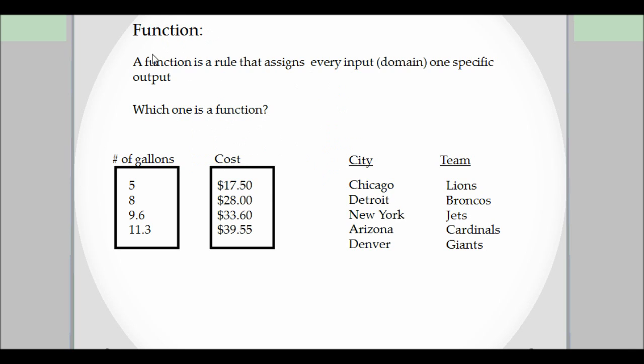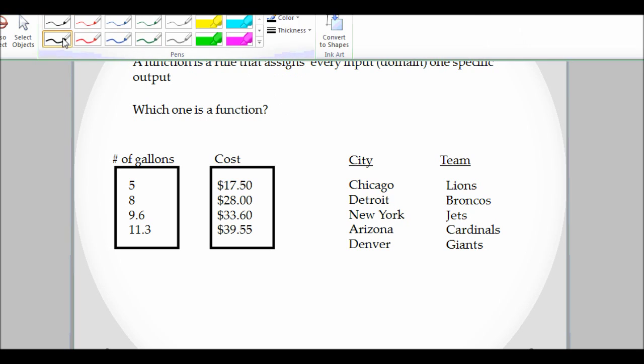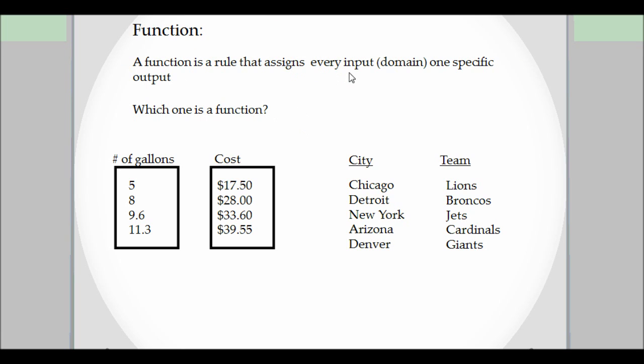So let's talk about a function. A function is a rule that assigns every input one specific output. So here's our two examples, which one is a function. I gave the gallons and the cost one, I use different inputs now, but I believe that this should be true.